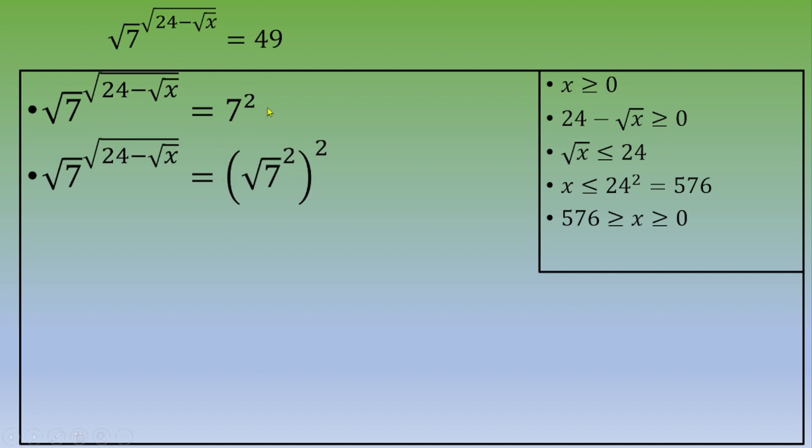Now we apply the power rule, which states that (a^n)^m = a^(n×m).